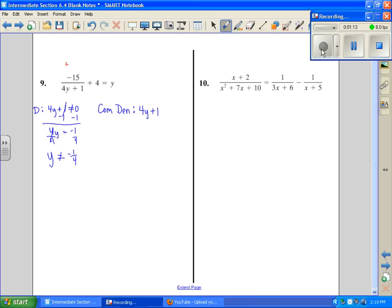I'm going to multiply each term in there by 4y plus 1. Then this cancels that, and I'm left with negative 15. Nothing cancels here, so I have 4 times 4y plus 1 equals y times 4y plus 1. I'm going to distribute and add like terms where I have parenthesis. That becomes 4y squared plus y. I add like terms over here, and I have negative 11.